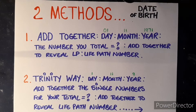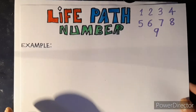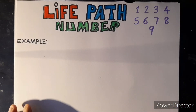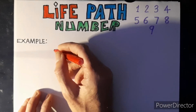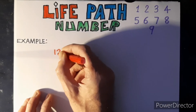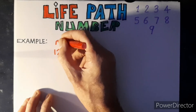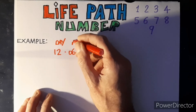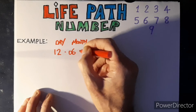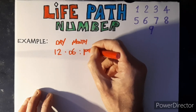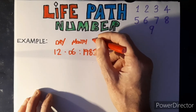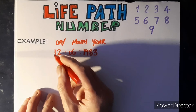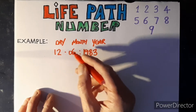Let me show you some examples. We'll do method one first. We go day, month, and year. The day will be the 12th, the month we'll do the sixth month, and the year we'll do 1983. Now we add all of them together: one plus two is three, plus six is nine, then one, ten...